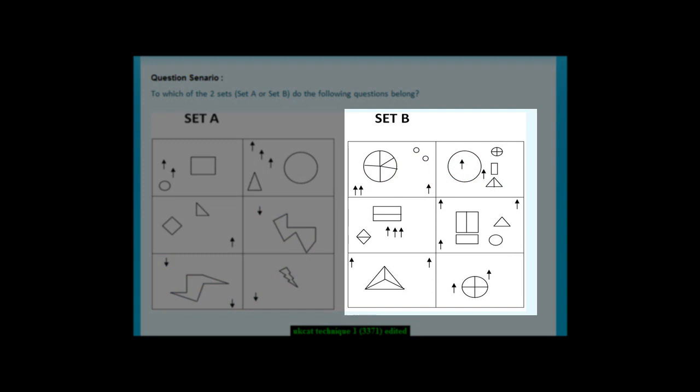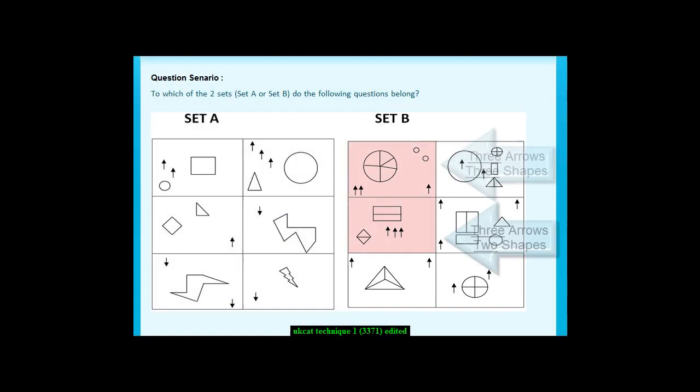Set B. There are arrows and shapes in each box. It is a good idea to start by counting the number of shapes in relation to the number of arrows. There is no relationship.